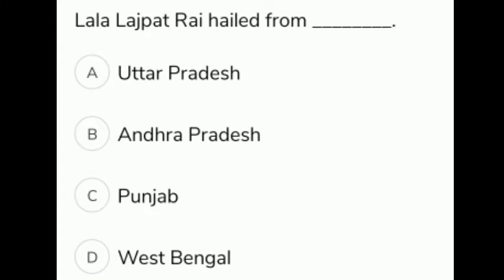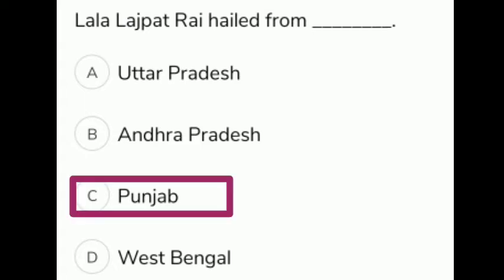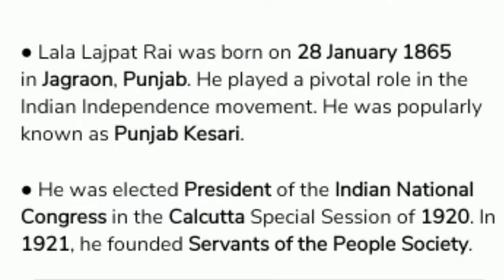Lala Lajpat Rai hailed from which state? The given options are A Uttar Pradesh, B Andhra Pradesh, C Punjab, D West Bengal. The correct answer is option C, Punjab. Lala Lajpat Rai was born on 28th January 1865 in Jagraon, Punjab. He played a pivotal role in the Indian independence movement and was popularly known as Punjab Kesari.